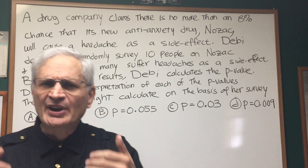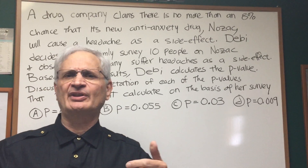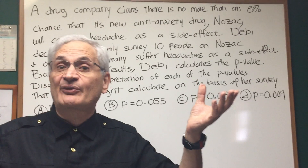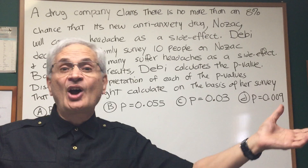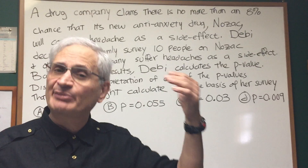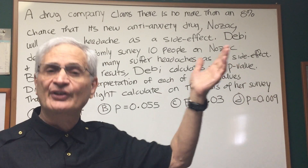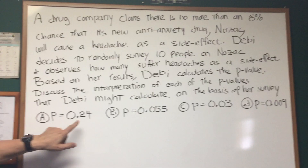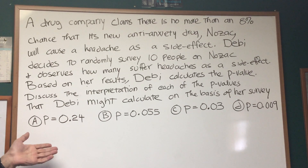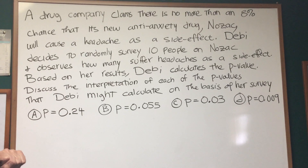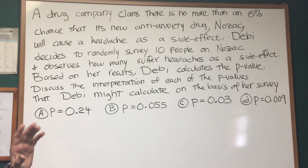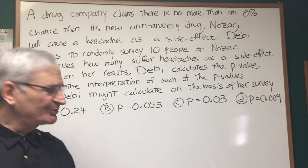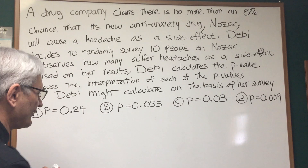Since the p-value is interpreted as the probability that it's a confirmation, the higher the p-value, the better. If we have a p-value of 1, or 100%, that means our survey is in complete agreement with the drug company's claim. But if the p-value is low — let's say 0.24, or 24% — it's still not enough to cause us to sow some doubts about the null hypothesis.